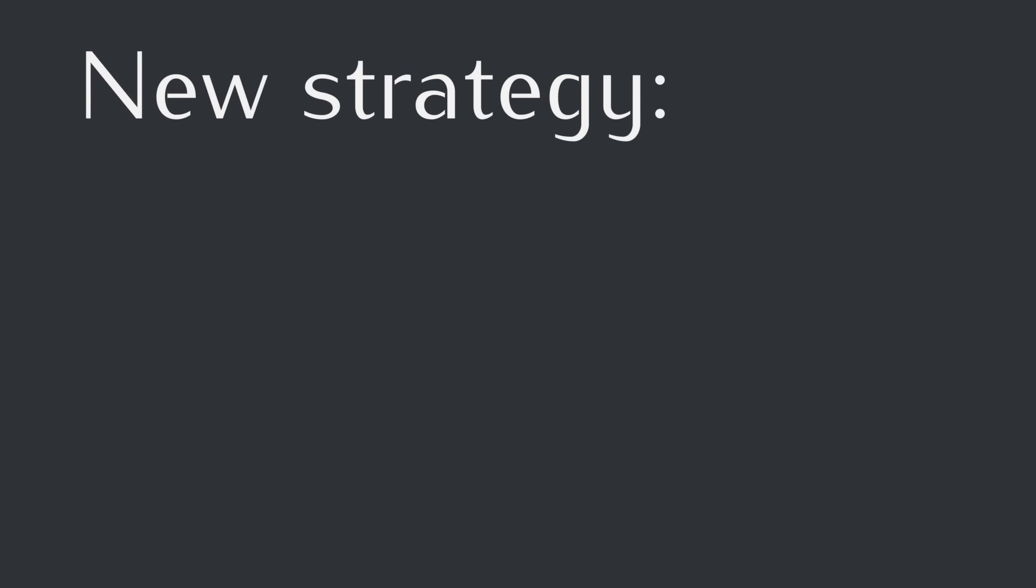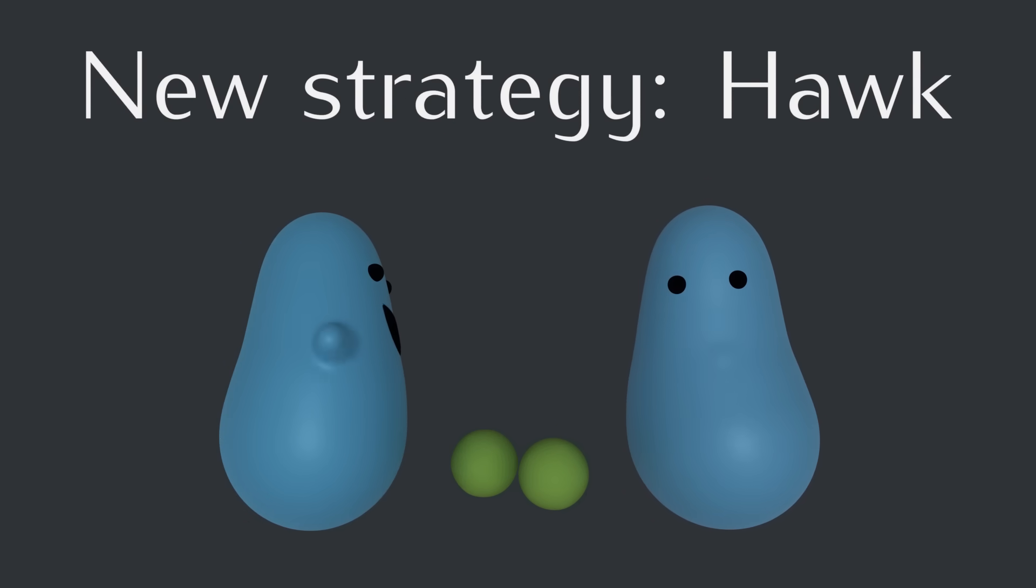Alright, now let's add a new strategy called the Hawk strategy. Hawks are more aggressive. If a hawk meets a dove, the hawk will go for the same piece of food as the dove, eat half of it, and then quickly eat the other piece of food, taking it for itself.